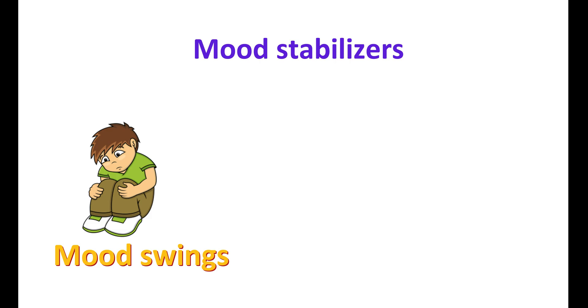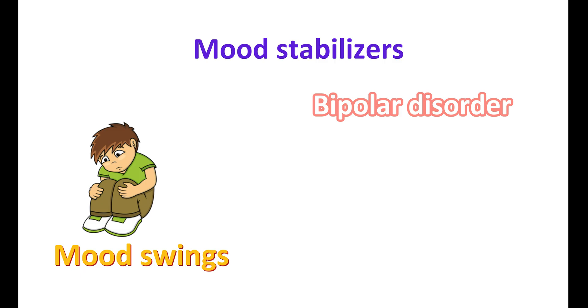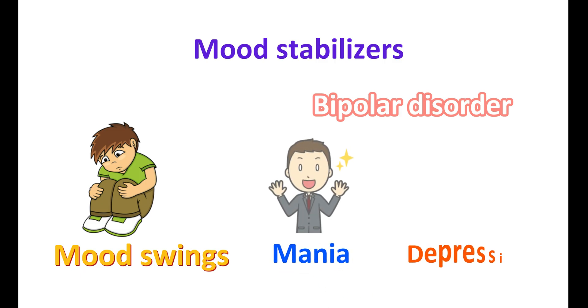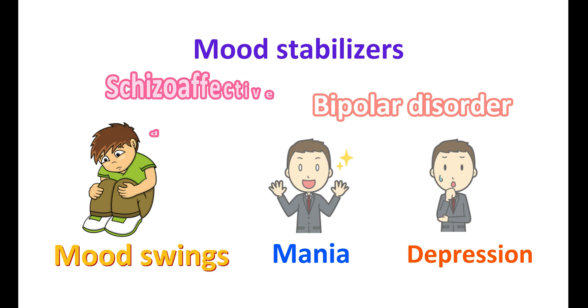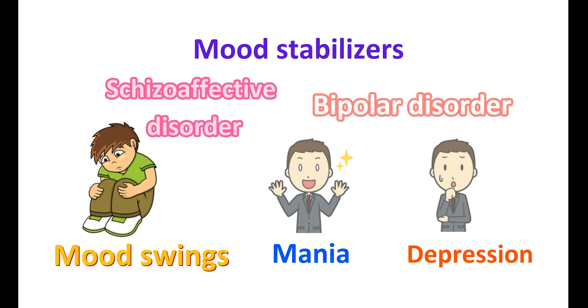Mood stabilizers are one group of medications used to control mood swings. Changes in mood can be observed in disorders like bipolar disorder, where the mood swings between mania and depression in a cyclic manner. These mood swings can also be observed in schizoaffective disorder, where psychotic symptoms are associated with depressive symptoms. Today in this video, let us discuss the different types of mood stabilizers.